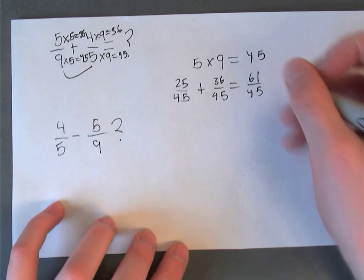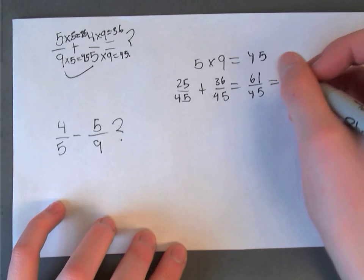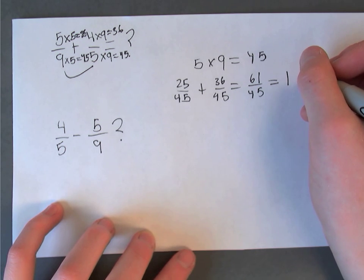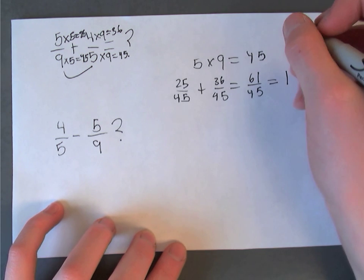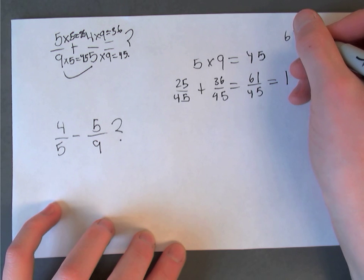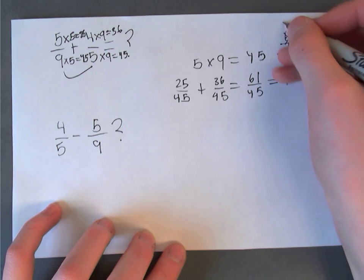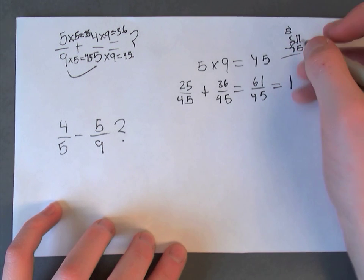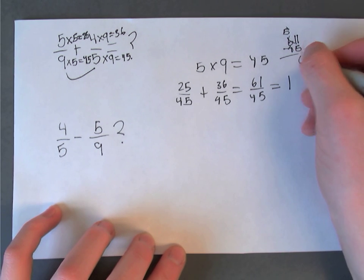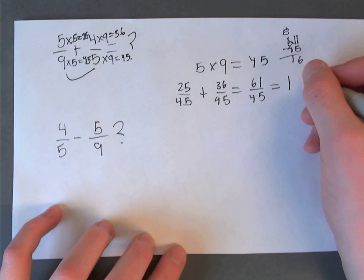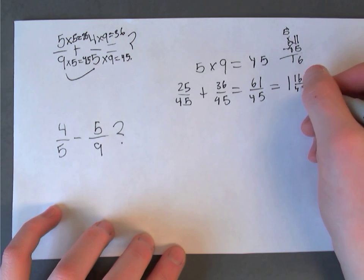So that's 61. And that's also equivalent to... 61 minus 45, that's 16. 1 and 16 over 45.